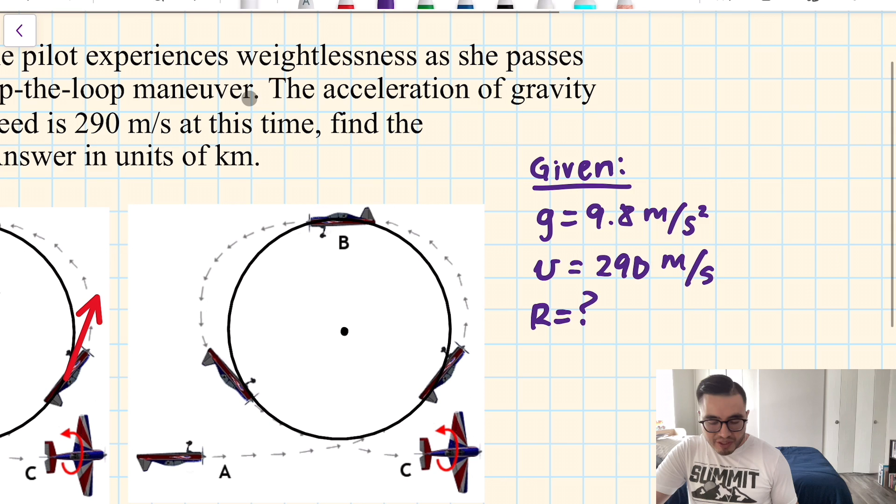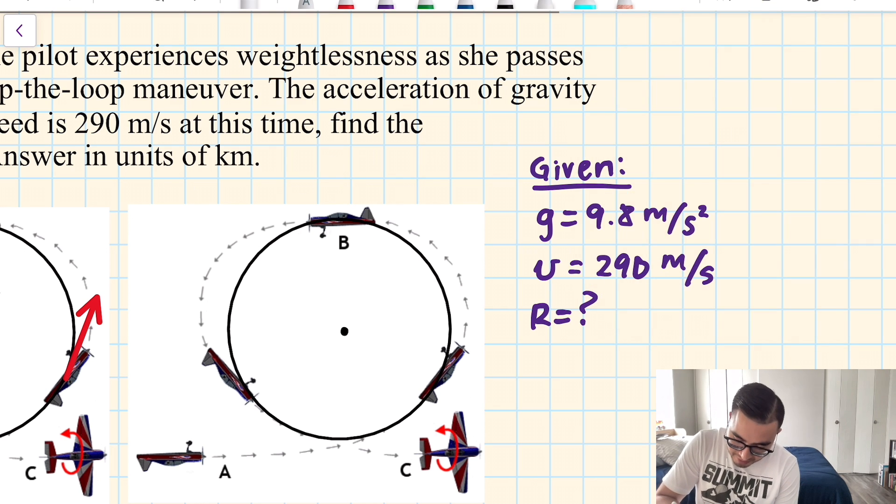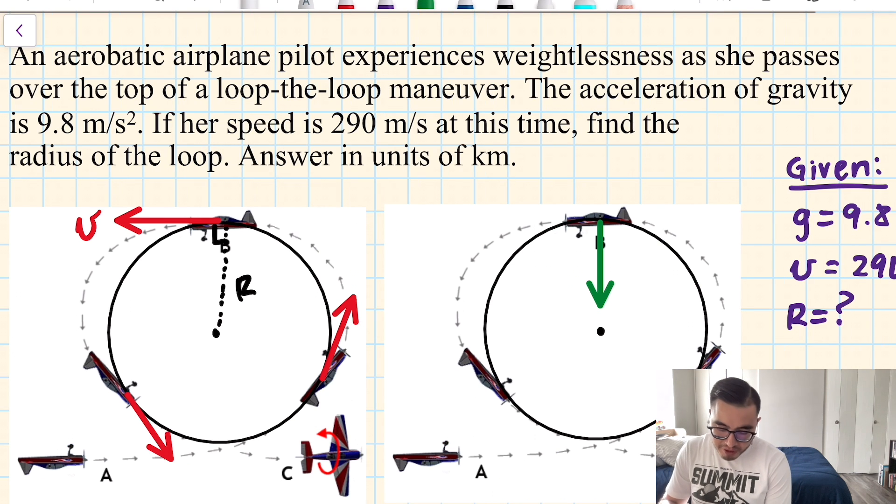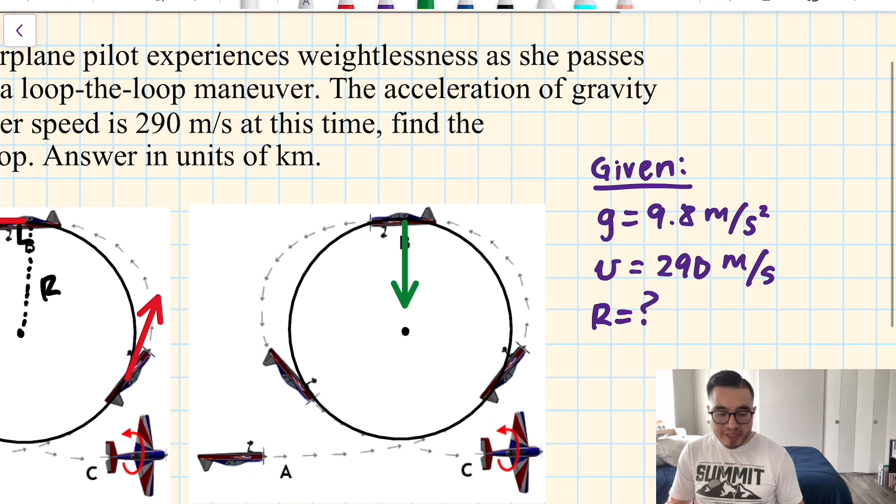So, I'm going to ignore the fact that she feels weightless to make my point. At location B, the person has mass, and she will experience the gravitational field of Earth. That means she has weight. We'll call this mg. And it's pointing down, of course.